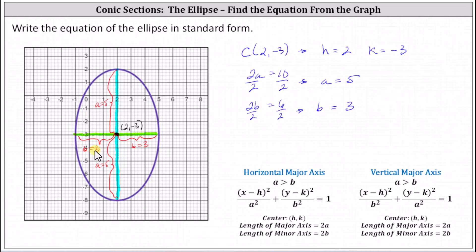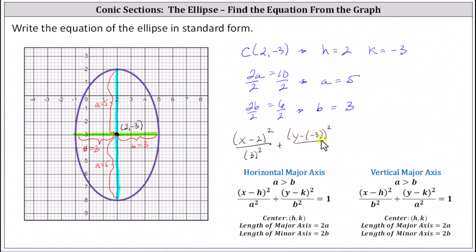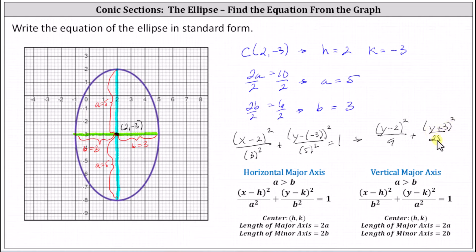We have all the information we need to write the equation of the ellipse in standard form. Again, we have a vertical major axis, and therefore the equation is the square of x minus h, which is the square of x minus two, divided by b squared, which is the square of three. Then plus the square of y minus k, which gives us the square of y minus negative three, all divided by a squared, which is the square of five, equals one. Simplifying, the final equation is the square of x minus two divided by nine, plus the square of y plus three divided by 25, equals one.